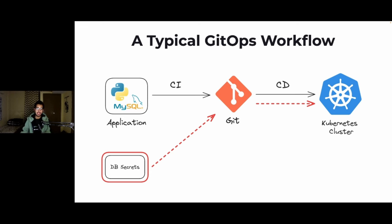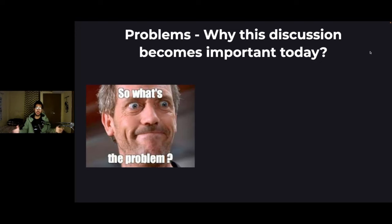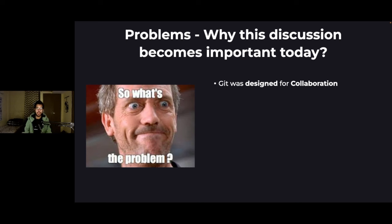How can we manage these database secrets so that they stay secure and our application can readily access them whenever it wants? One of the fundamental challenges we face in GitOps is that Git itself was initially designed for collaboration — its core purpose is to provide a way for different teams to collaborate and track changes of source code. When it comes to handling secrets and sensitive information related to our application, this collaborative nature of Git is what introduces a potential security risk.